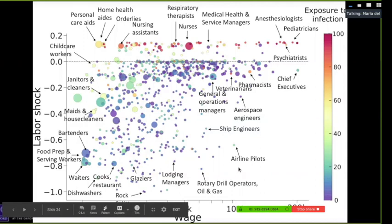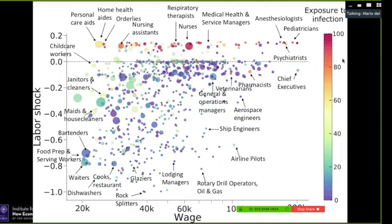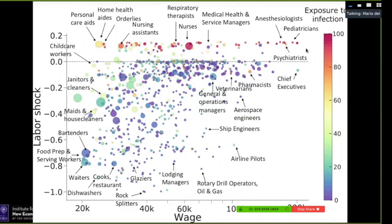Among high-wage occupations, it is really only airline pilots who experience a significant shock — it is remarkable that almost no high-wage workers receive a hard shock. We can also see exposure to infection risk using O*NET ratings, which indicate which occupations have high exposure to disease and infection. Among low-wage occupations that experience a low economic shock, there tends to be high infection exposure — janitors, cleaners, personal care workers, and delivery workers. So low-wage workers are either not getting paid, or they are being exposed to the virus — the very people helping us keep the economy running.